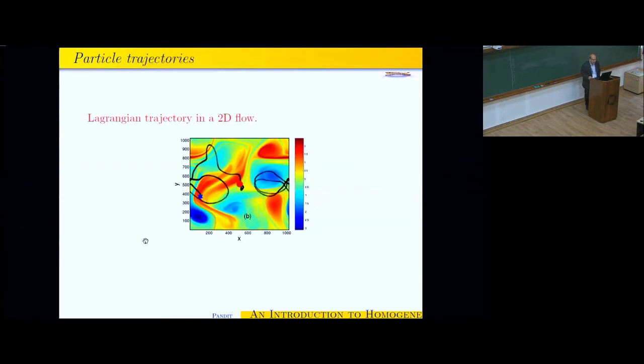Then you can liberate particles in the flow. The simplest particles are neutrally buoyant Lagrangian tracers, and here is a trajectory of such a tracer in a two-dimensional flow taken from a direct numerical simulation in our group.